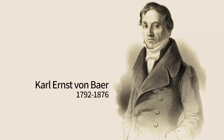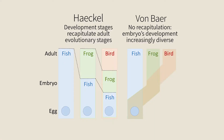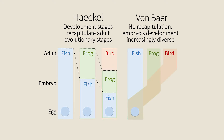Von Baer, who preceded Haeckel, interpreted the same observations in a different way. He proposed that embryo similarity suggests that they undergo similar embryonic stages. This seems to be indeed the case.